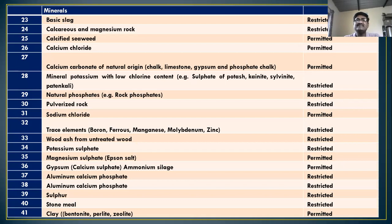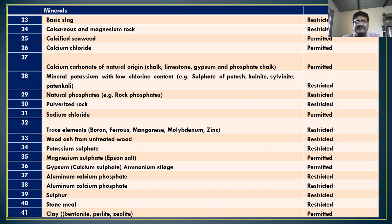Calcium, calcified seaweed, calcium chloride, calcium carbonate of natural origins like chalk, limestone, gypsum, and phosphate chalk are permitted. Mineral potassium with low chlorine content, natural phosphate, pulverized rock, and sodium chloride are restricted. Trace elements like boron, ferrous, manganese, and zinc are restricted. Wood ash from untreated wood is restricted. Potassium sulfate is restricted. Magnesium sulfate and Epsom salt are permitted. Gypsum and calcium sulfate are permitted, but ammonium silage is not permitted.